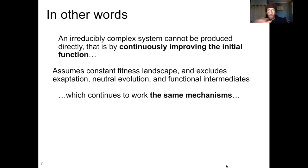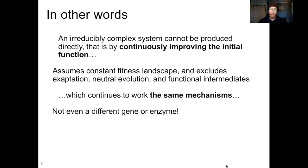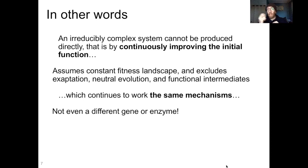Continuing: "which continues to work by the same mechanisms." So now we're saying not only are you excluding a bunch of processes, but you can't even use different things when you're evolving a system. You can't use a different gene, you can't use a different enzyme — it has to be the same basic mechanism as you evolve a feature.